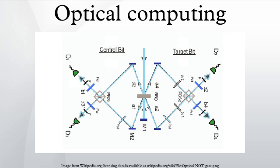A significant challenge to optical computing is that computation is a non-linear process in which multiple signals must interact. Light, which is an electromagnetic wave, can only interact with another electromagnetic wave in the presence of electrons in a material, and the strength of this interaction is much weaker for electromagnetic waves such as light than for the electronic signals in a conventional computer. This may result in processing elements for an optical computer requiring more power and larger dimensions than those for a conventional electronic computer using transistors.